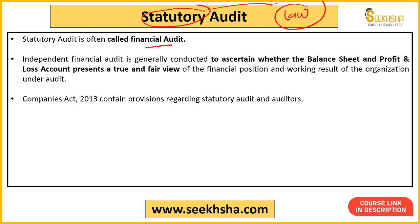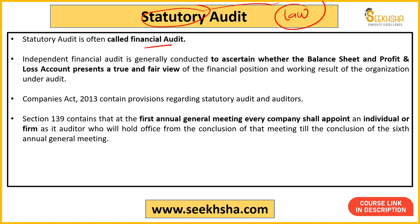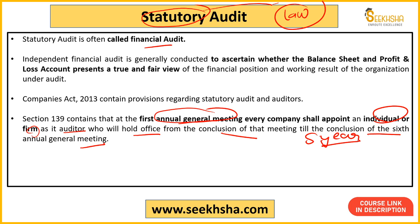The auditor checks whether the financial statements truly represent the financial position and working of the organization. Under the Companies Act 2013, provisions related to statutory audit and auditors exist. Section 139 states that in the first Annual General Meeting of every company, they will appoint an individual or a firm as auditor. That person will hold office from the conclusion of that meeting till the conclusion of the 6th Annual General Meeting — that is, for 5 years. Though the auditor can be changed within these 5 years too.